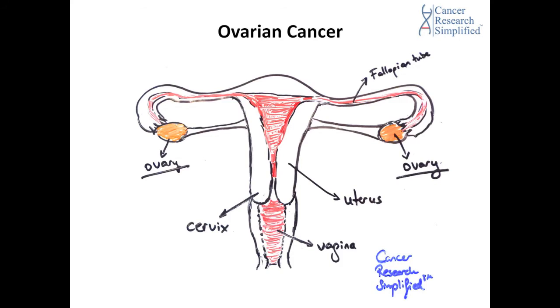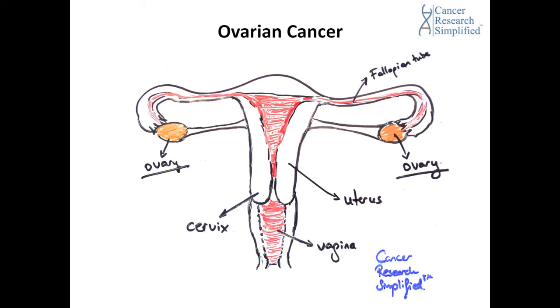So as you can see in the schematic, the cervix is the narrow lower part of the uterus where it connects to the upper part of the vagina, and the ovaries are reproductive organs on each side of the uterus in the lower abdomen.